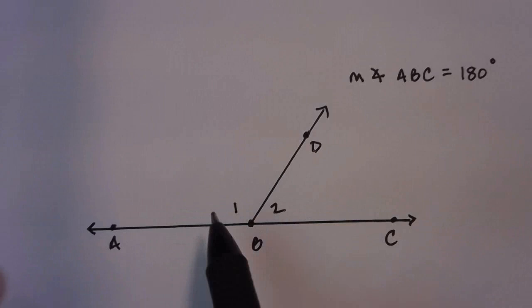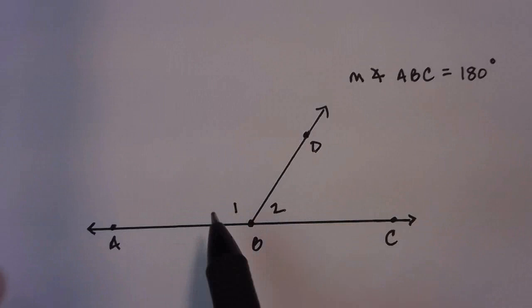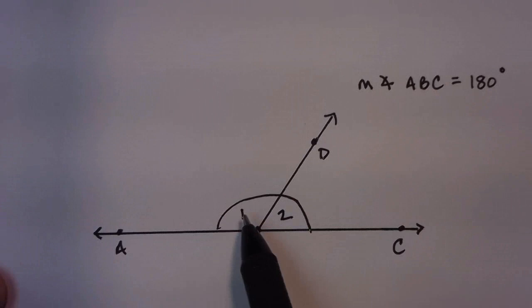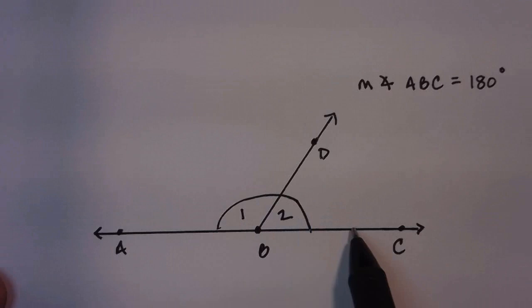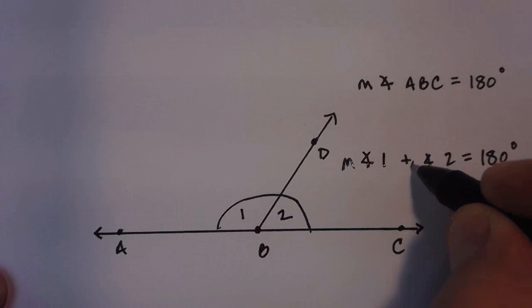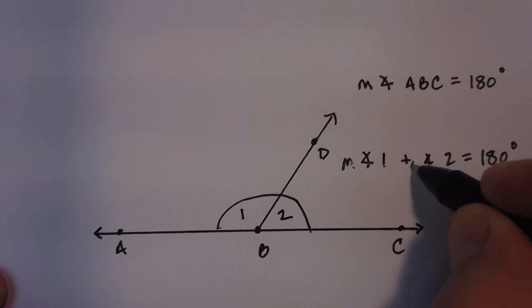What happens now is if you add angle one plus angle two, that would create this entire straight angle, which is 180 degrees. So angle one plus angle two equals 180 degrees, the measure of those angles, by the way. When that happens, these two angles are angles that are called supplementary.